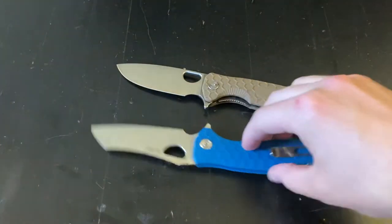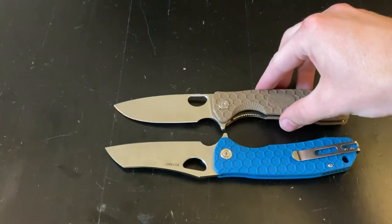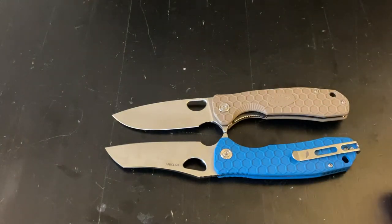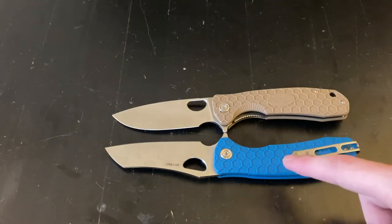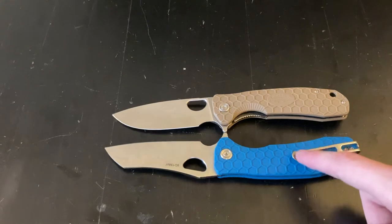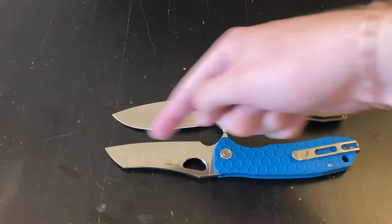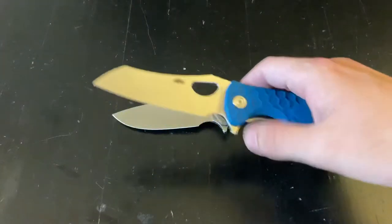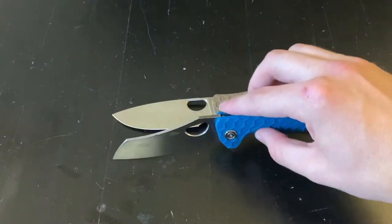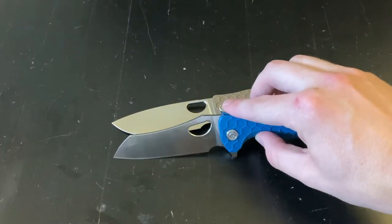I also have the other large Honey Badger. Here is the two side by side. You can see that this one, I think the blade's a little bit longer on this one. Definitely has like a more flat cutting edge to it.